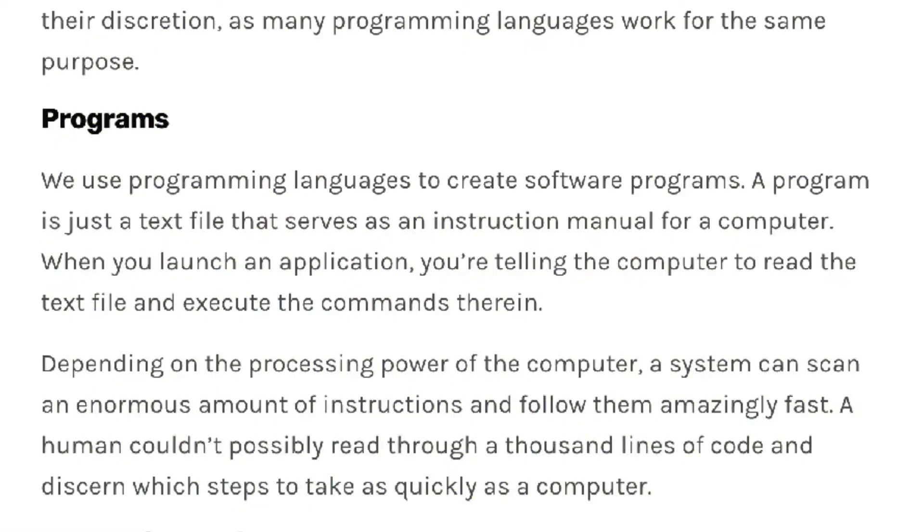We use programming languages to create software programs. A program is just a text file that serves as an instruction manual for a computer. When you launch an application, you're telling the computer to read the text file and execute the commands inside. Depending on the processing power of that computer, a system can scan an enormous amount of instructions and follow them amazingly fast — a human couldn't possibly read through thousands of pages of instructions and decide which steps to take as quickly as a computer, which is why these machines are so useful.